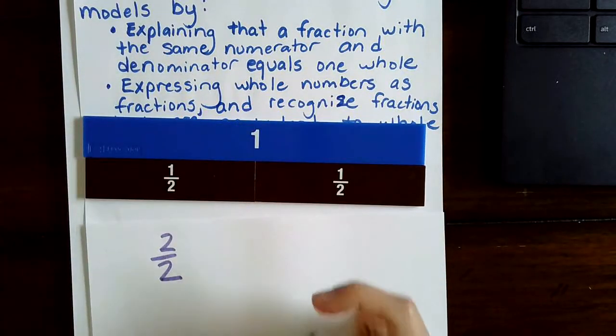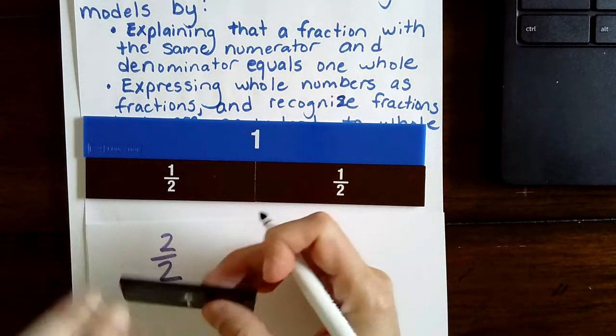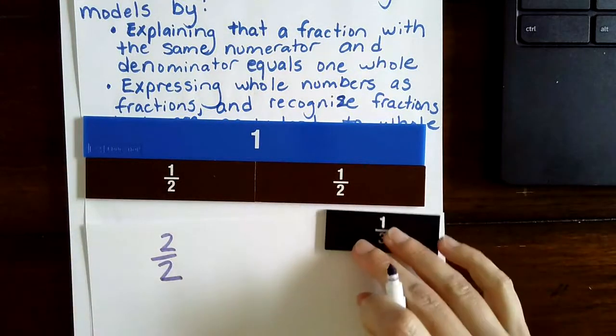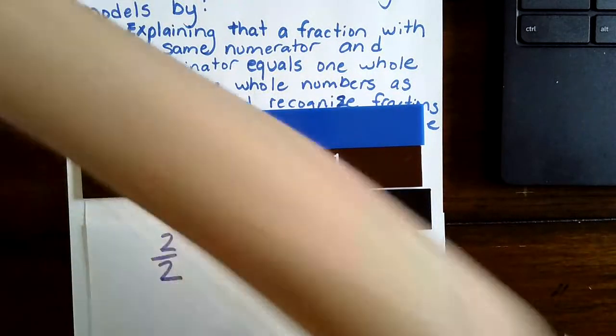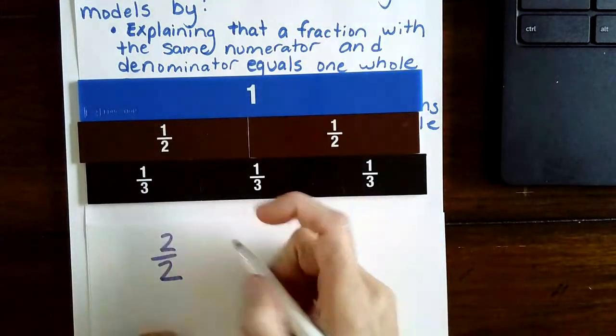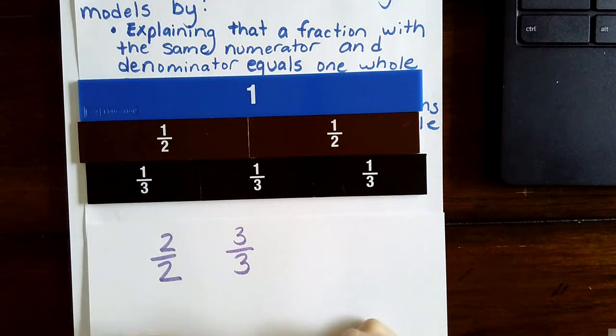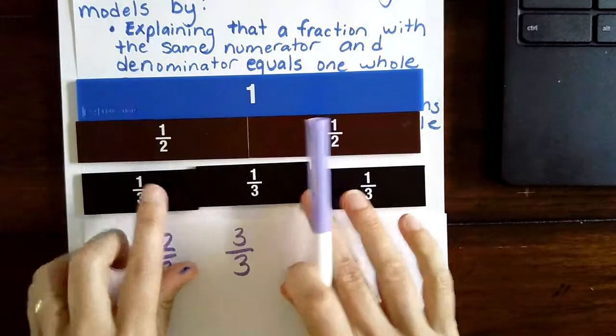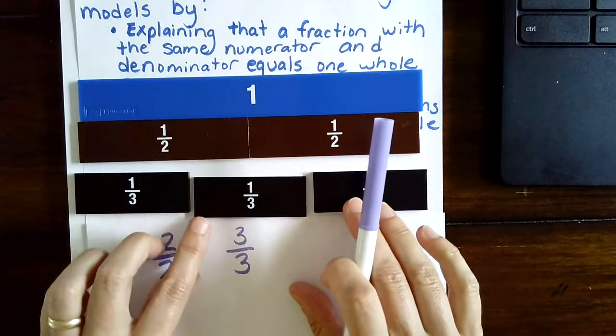Now with thirds, we would have one-third, two-thirds, three-thirds. So three-thirds or three out of three equals a whole. If this were a candy bar and we cut it into three pieces, three equal pieces, each piece would be a third.